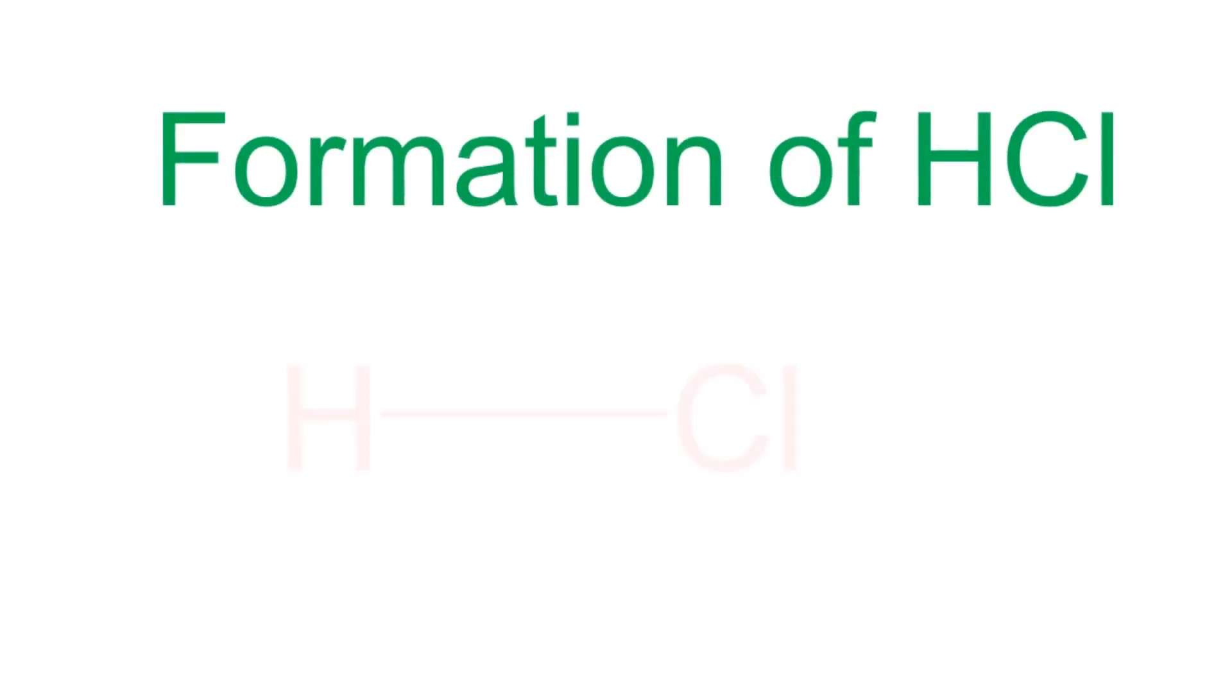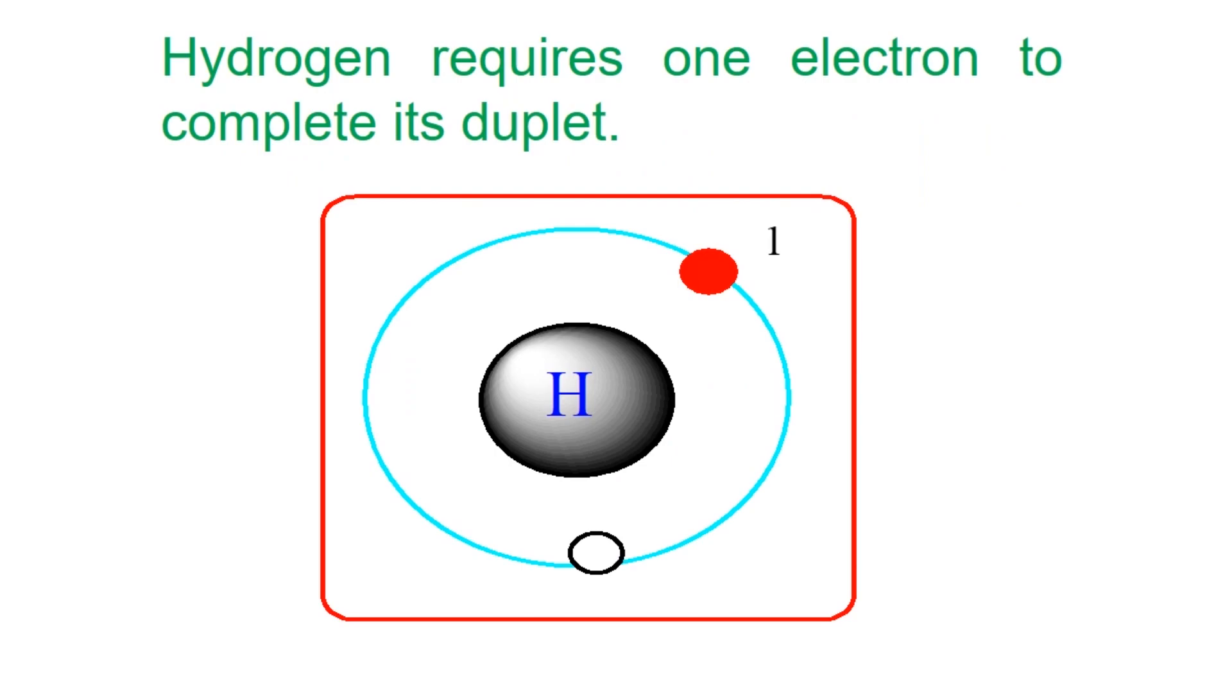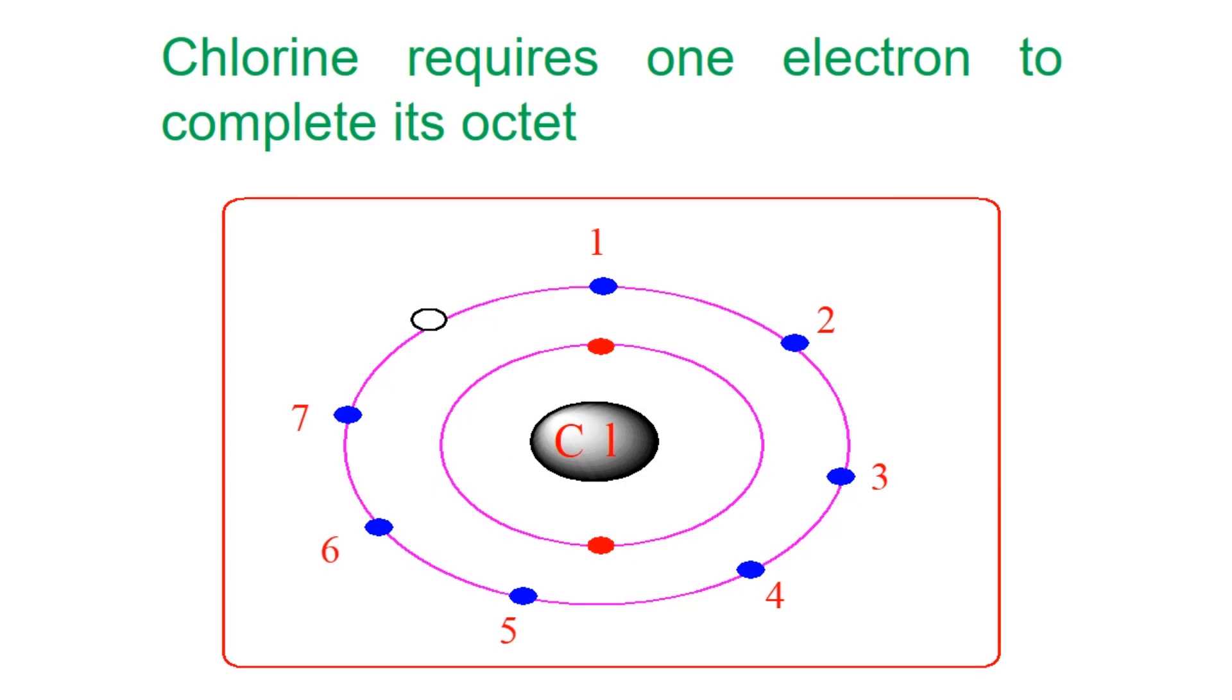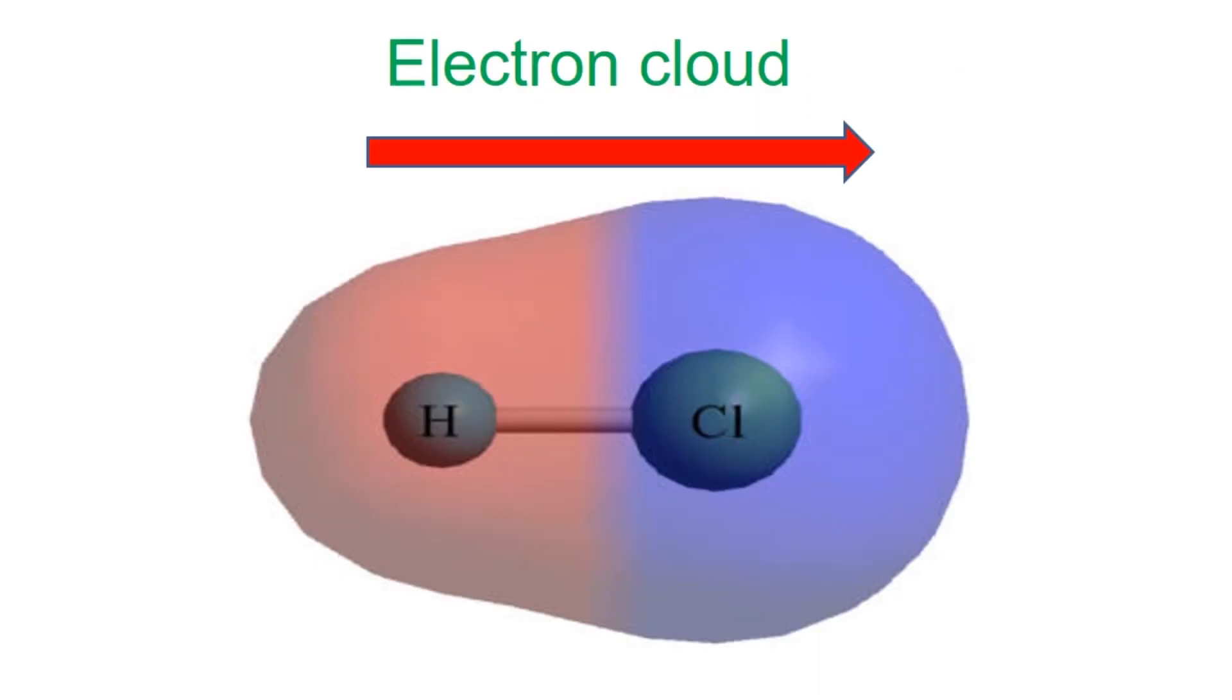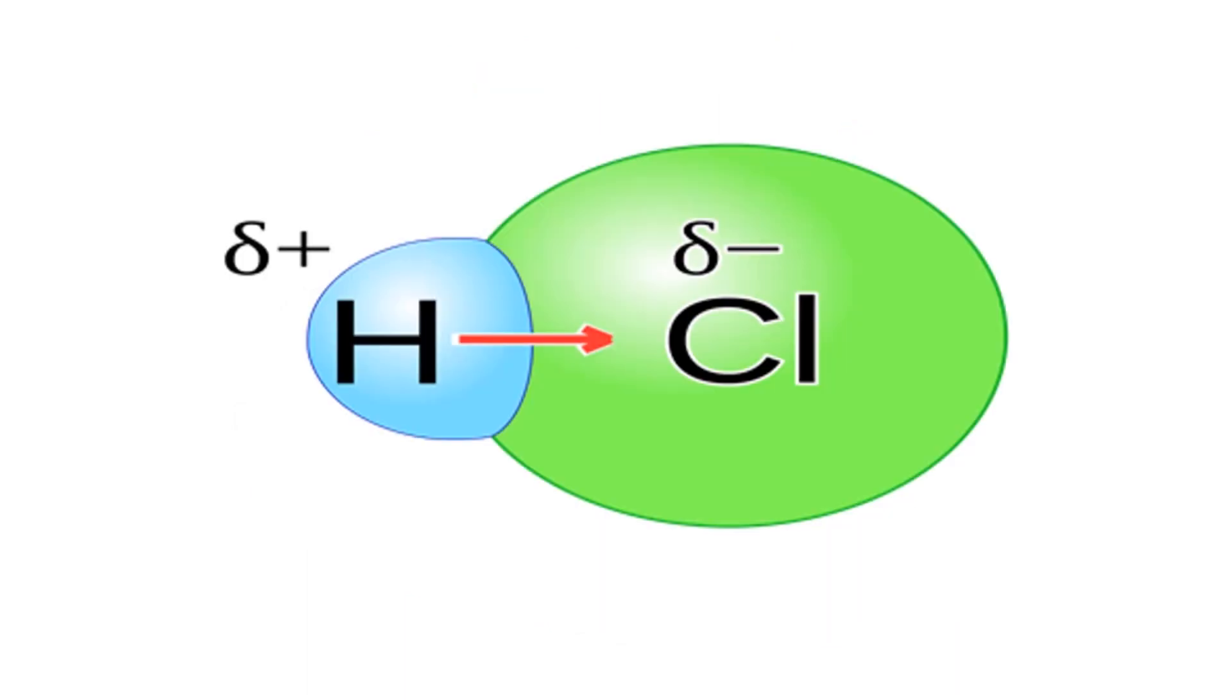Let us consider the formation of HCl. Hydrogen requires one electron to complete its duplet and chlorine atom requires one electron to complete its octet. When a covalent bond is formed between two different elements like hydrogen and chlorine, it is polar in nature because chlorine is more electronegative than hydrogen atom. Therefore, electron cloud is shifted towards chlorine atom. Due to this reason, a partial negative charge appeared on chlorine atom and a positive charge on hydrogen atom.